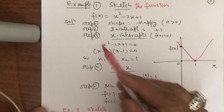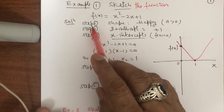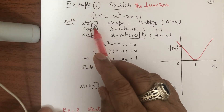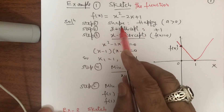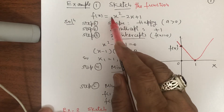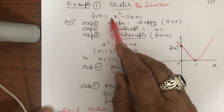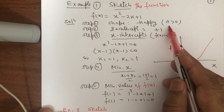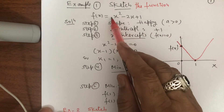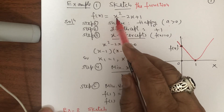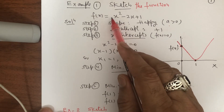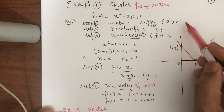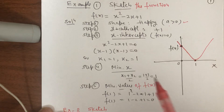Start with Step 1: decide the shape of the curve. The shape of the curve depends on the value 'a' with x². If a is positive, it is happy. If a is negative, it is sad. Here a is positive 1, so this is happy — Step 1 finish.